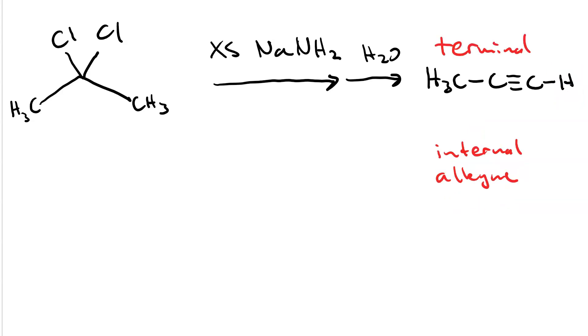The simplest internal alkyne is 2-butyne. Internal, because the triple bond is attached to two R groups, rather than an R group and an H, as we saw with the terminal one. What substrate would you use to make this 2-butyne? Pause your video now and draw a substrate that would work.